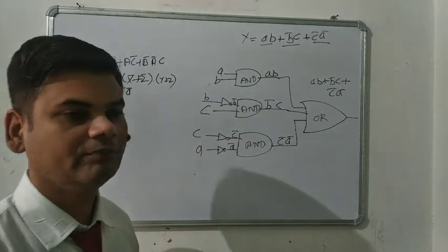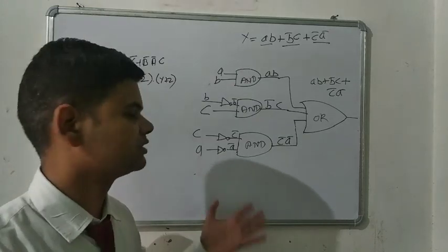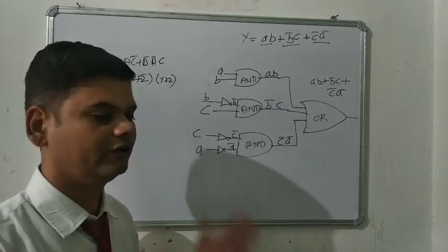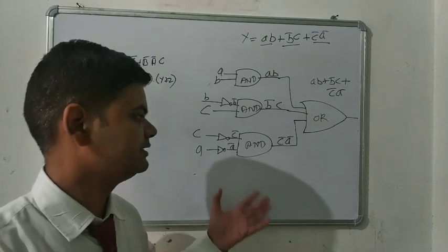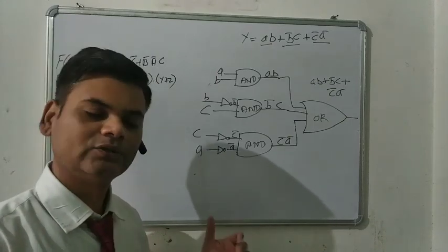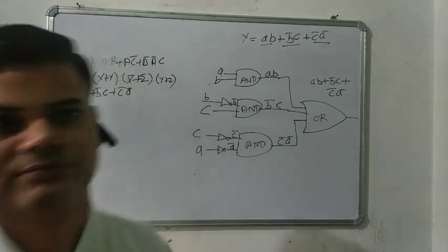So we have completed this chapter. In our first video we discussed the Truth Table for two variables and three variables, and in this topic we drew all the logic circuits. Thanks for watching this video.